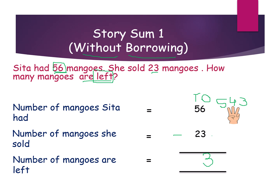Now in the tens place, what are the digits? 5 and 2. 5 is the biggest number. Keep it in mind: 5 and open 2 fingers. Again we are going backward. 5 before is 4, 4 before 3. So 5 minus 2 is 3. How many mangoes are left? Sita had 33 mangoes left.